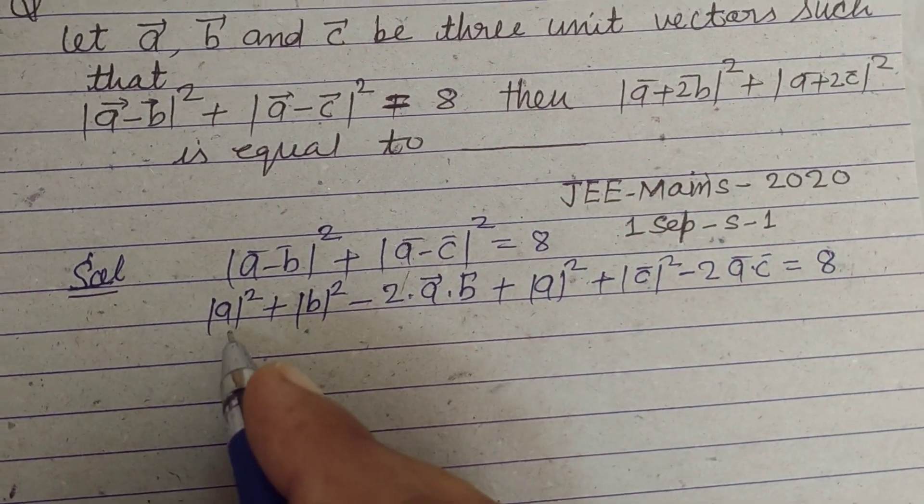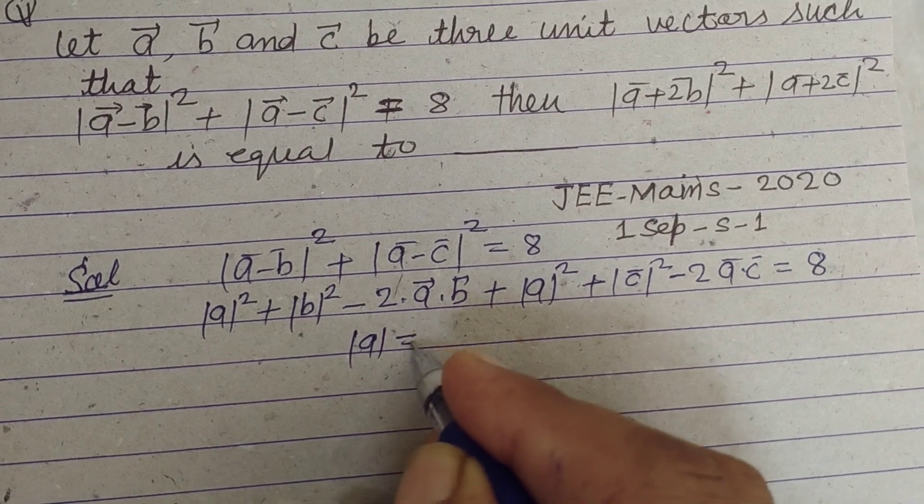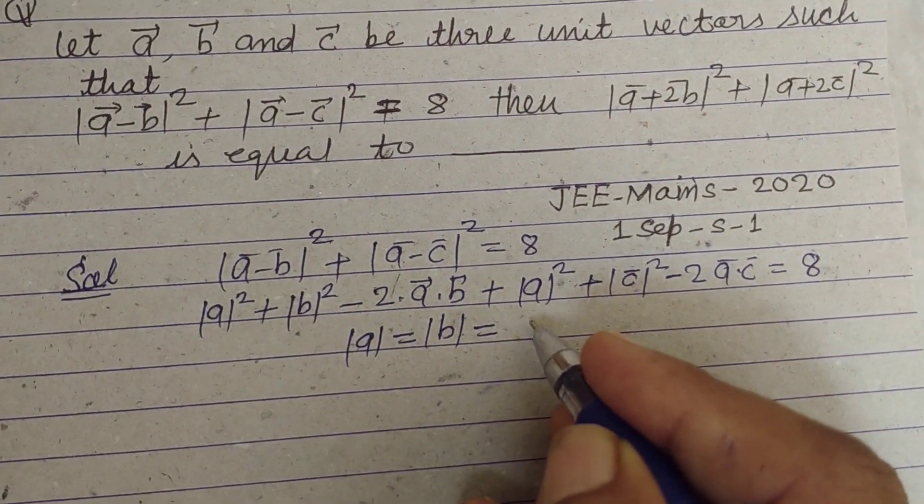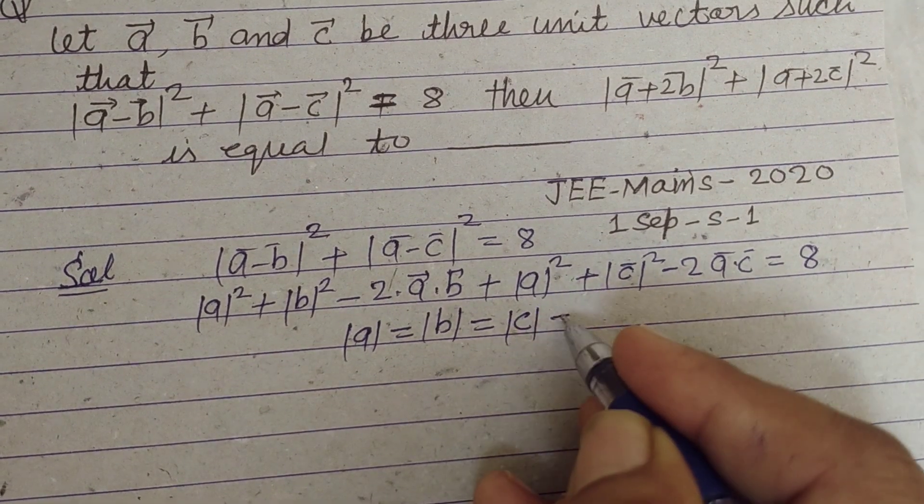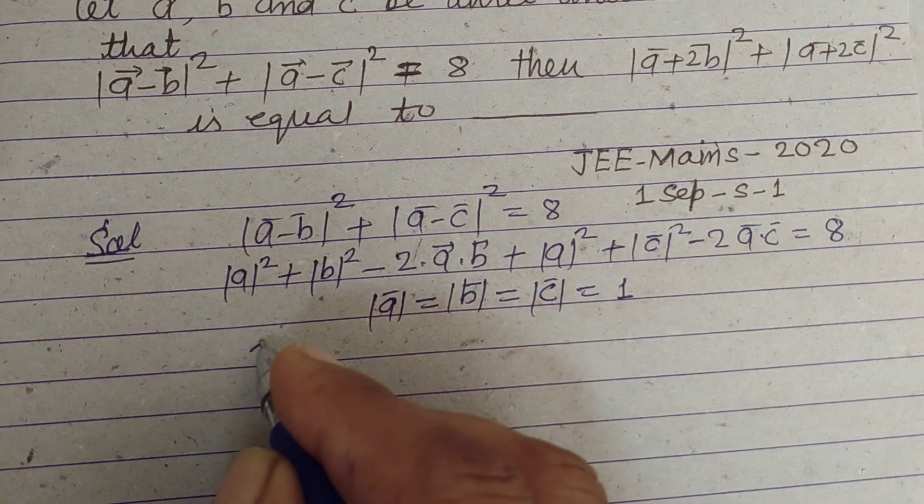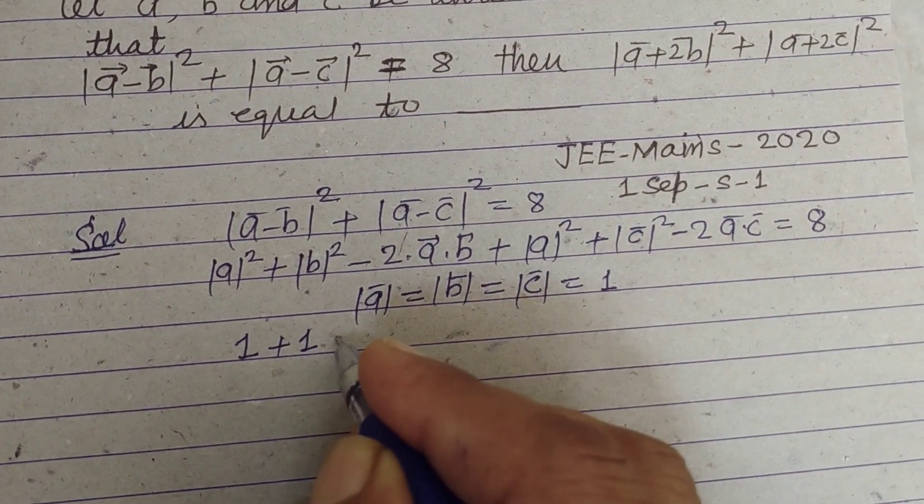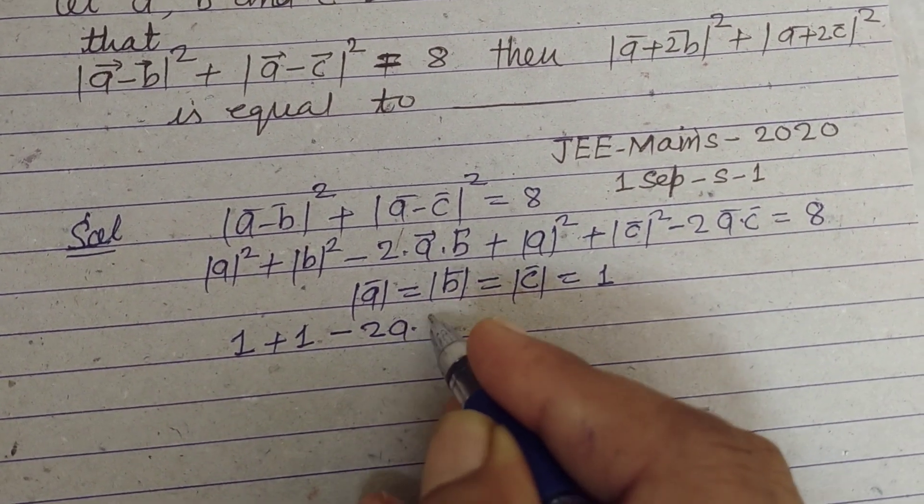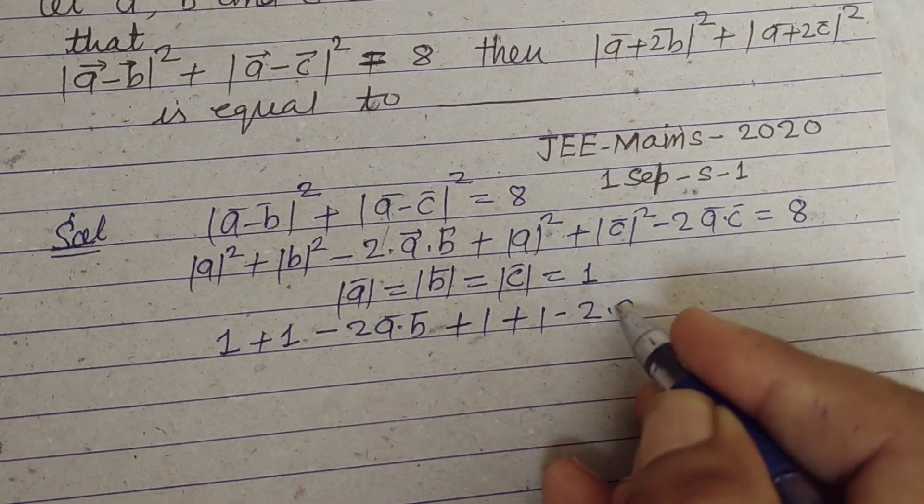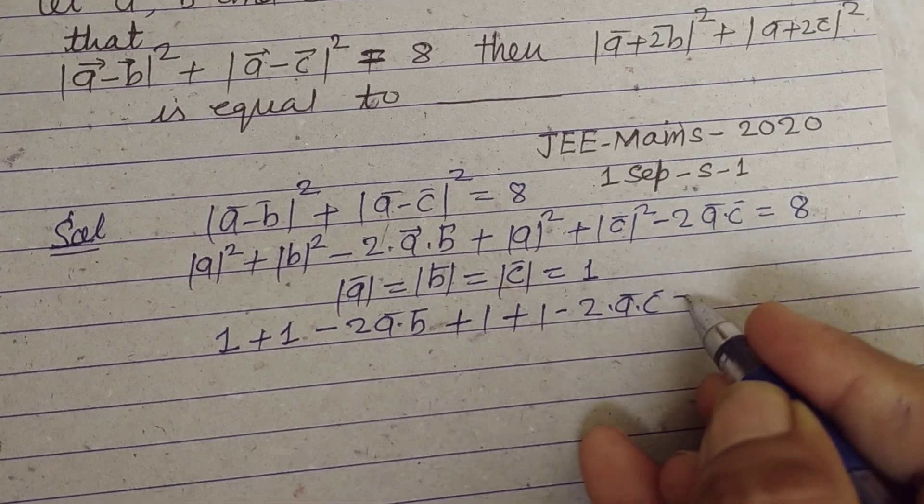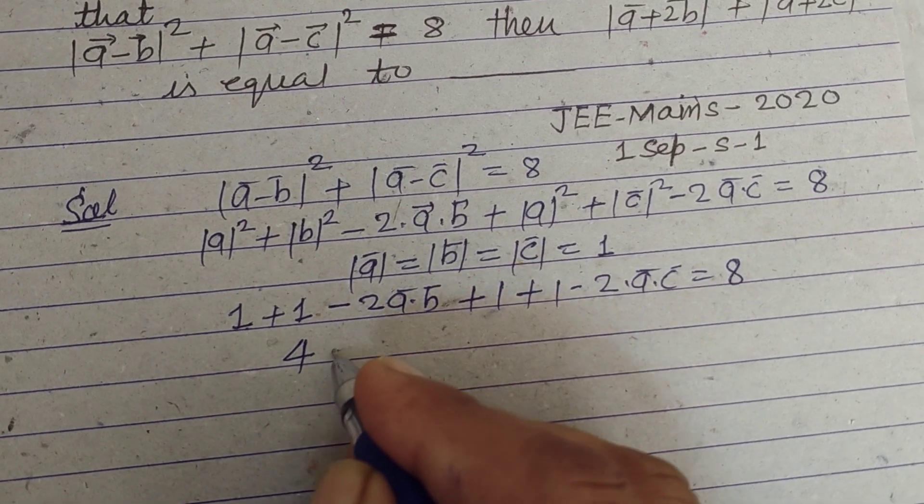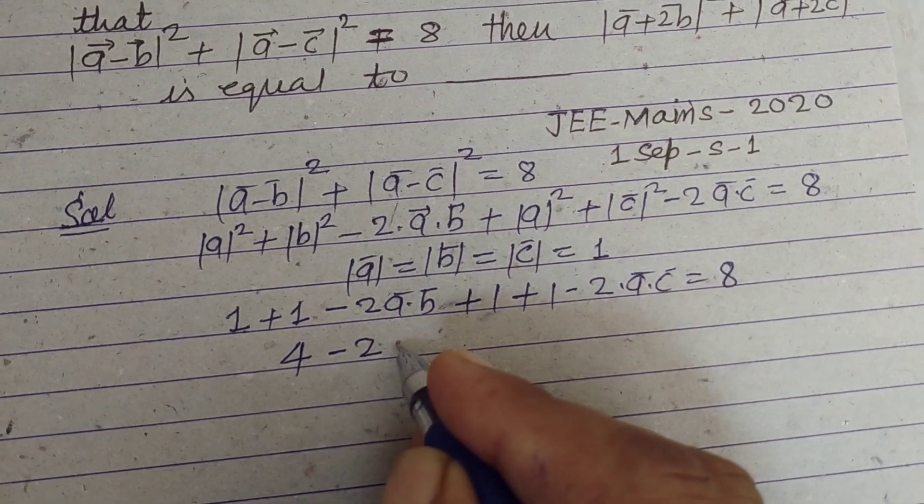Since it is given that a, b, c are unit vectors, so the mode of these vectors is equal to 1. So we put here 1 plus 1 minus 2 a dot b, 1 plus 1 minus 2 a dot c equal to 8. 1, 1, 2, 2, 1, 2, 4, and 2 is common from this and also a is common.